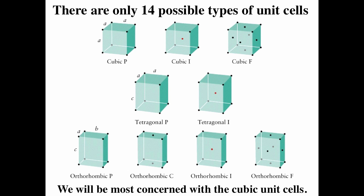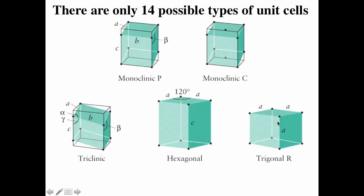There are only 14 possible types of unit cells — only 14 ways of packing these things. For cubic unit cells, each of the edges are the same and all the angles are 90 degrees. There are three different types of cubic unit cells: simple (or primitive), body-centered cubic, and face-centered cubic. Tetragonal means two of the lengths are the same and a third is different. For orthorhombic, all three edges are different lengths. Monoclinic doesn't have everything at 90 degrees. Triclinic, hexagonal (120 degrees), and trigonal round out the 14 unit cells.